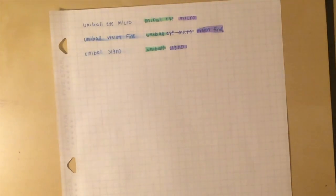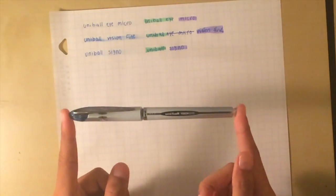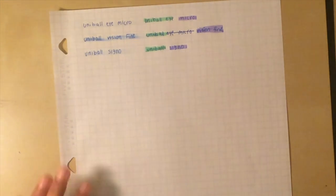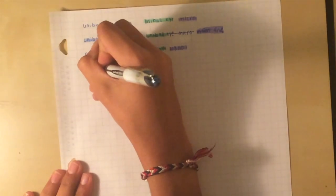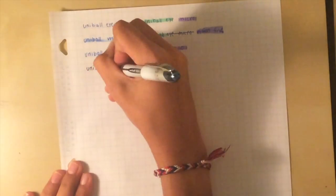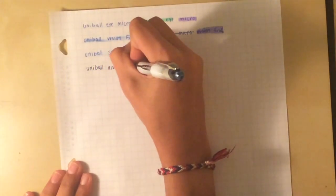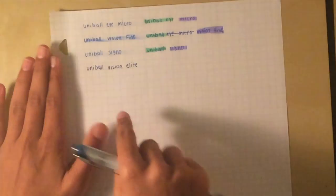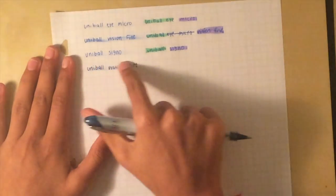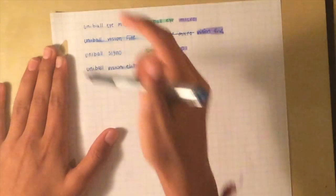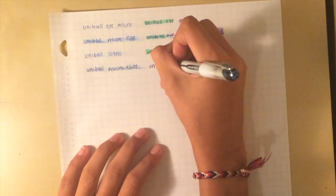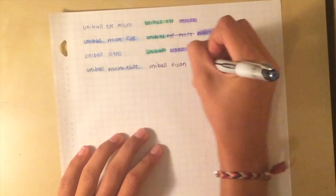Then the last pen we have is the Uniball Vision Elite. It should be a variation of the Uniball Vision Fine. As you can see it's probably the same or more thickness than the Uniball Vision Fine. Yes, it smears, but not as much as the fine.